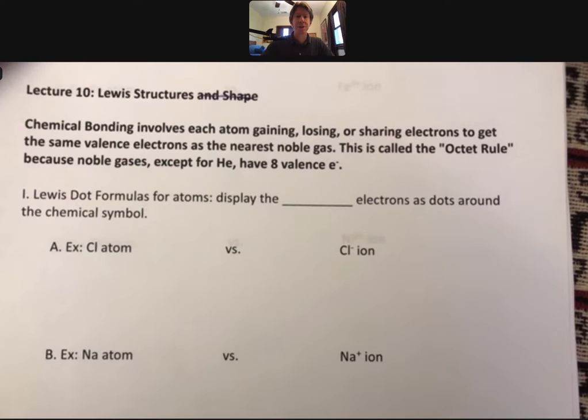Let's start by talking about chemical bonding. There are two types of chemical bonds: ionic bonds and covalent bonds. Both of them involve each atom gaining, losing, or sharing electrons to get the same valence electrons as the nearest noble gas. Because it's 8, this is called the octet rule, since oct means 8.